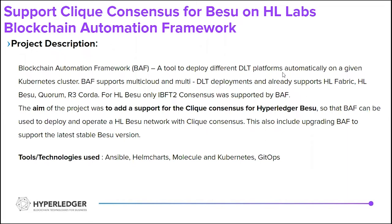R3 Corda. Before the project start, Hyperledger Besu was having support for only IBFT2 consensus. So the idea and aim of the project was to add support for QBFT consensus for Hyperledger Besu, so that Blockchain Automation Framework can be used to deploy and operate a Hyperledger Besu network with QBFT consensus. This also included upgrading BAF to support the latest stable Besu version.